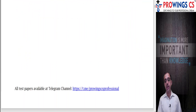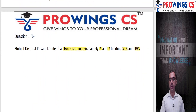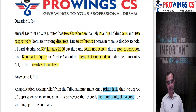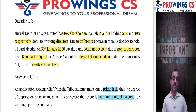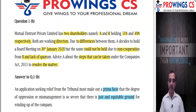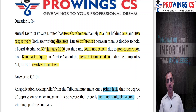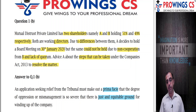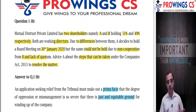Next question: SSA Mutual Fund - this trust, a private limited company, has two shareholders A and B holding 51% and 49% respectively. Both are working directors. Due to differences between them, A decides to hold a board meeting on 30th January, which could not be held due to non-cooperation of B and lack of quorum. Advise A on what steps shall be taken under the Companies Act to resolve this matter.